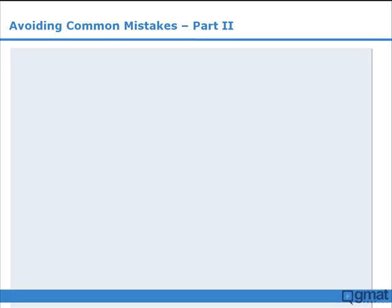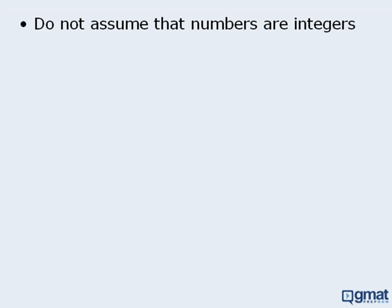In this lesson, we will examine how to avoid common mistakes that students make when tackling data sufficiency questions. The first tip is: do not assume that numbers are integers.